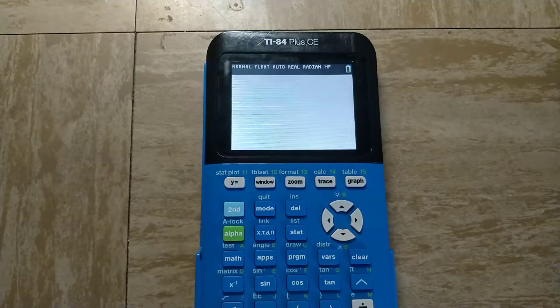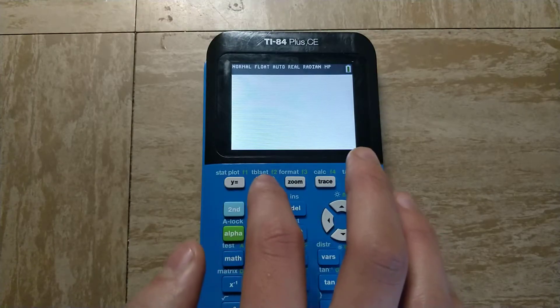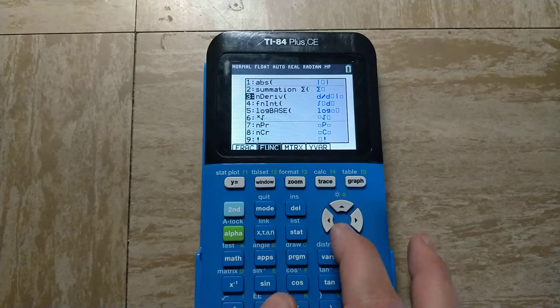For example, if I wanted to find the derivative of x squared at x equals 2, what I would do is press alpha and then F2, which is the window key, and then scroll down to derivative, which is the third option.